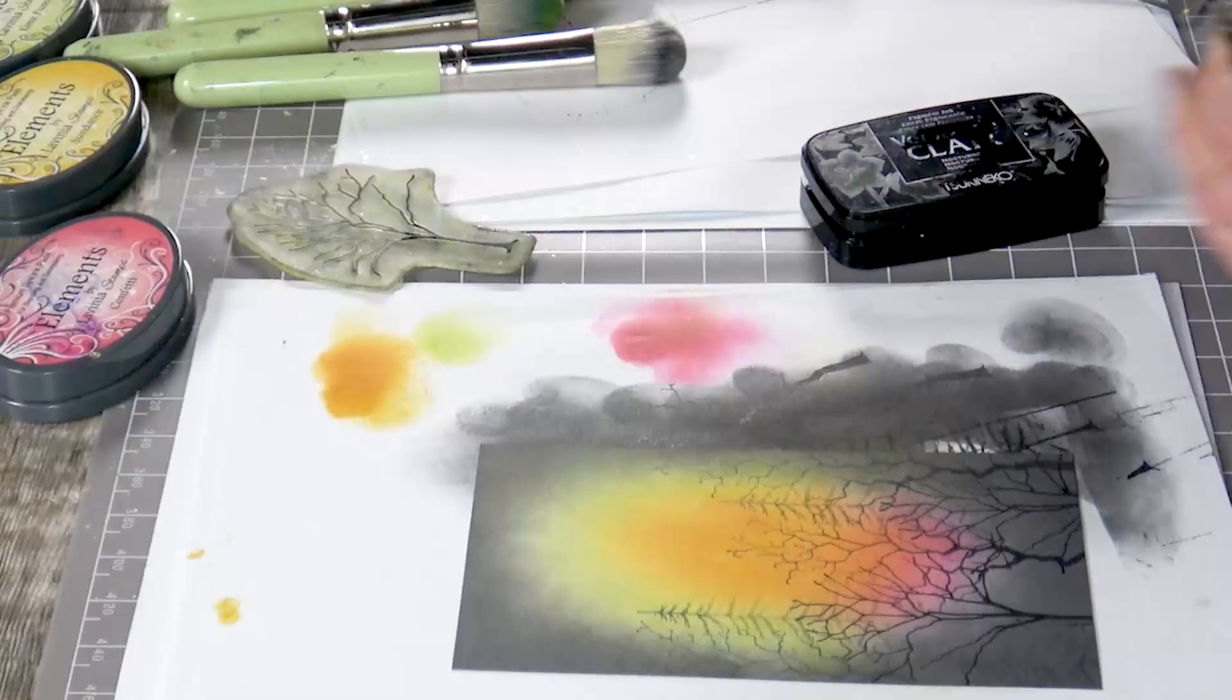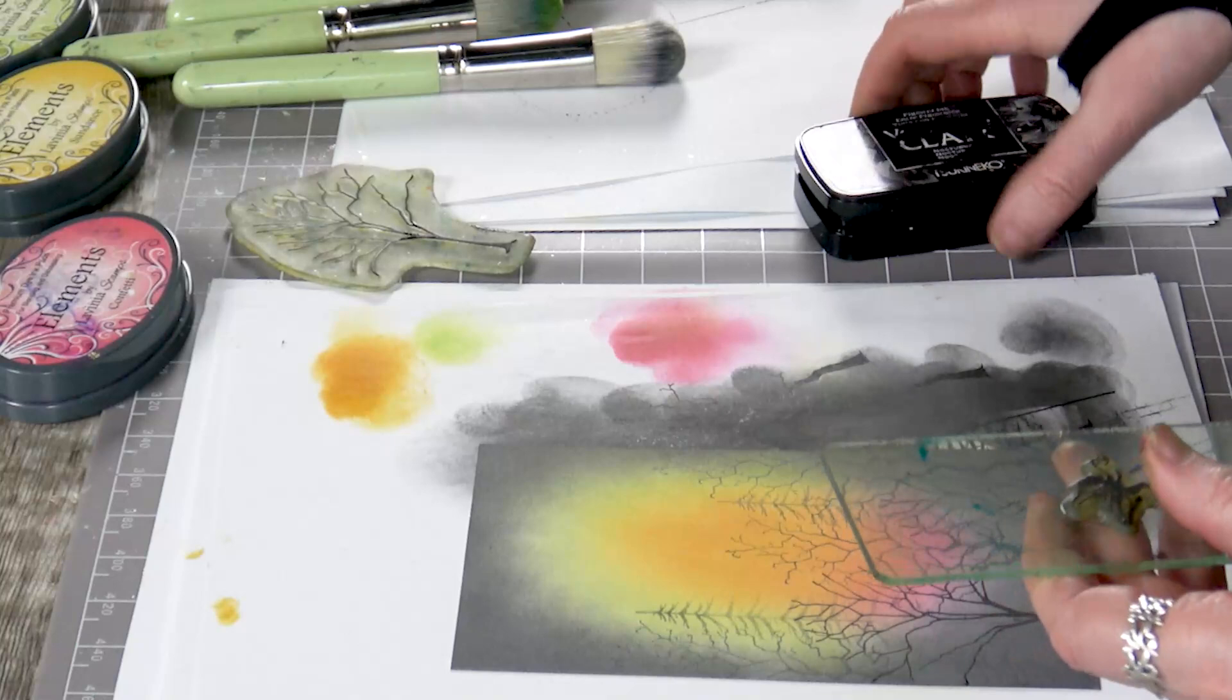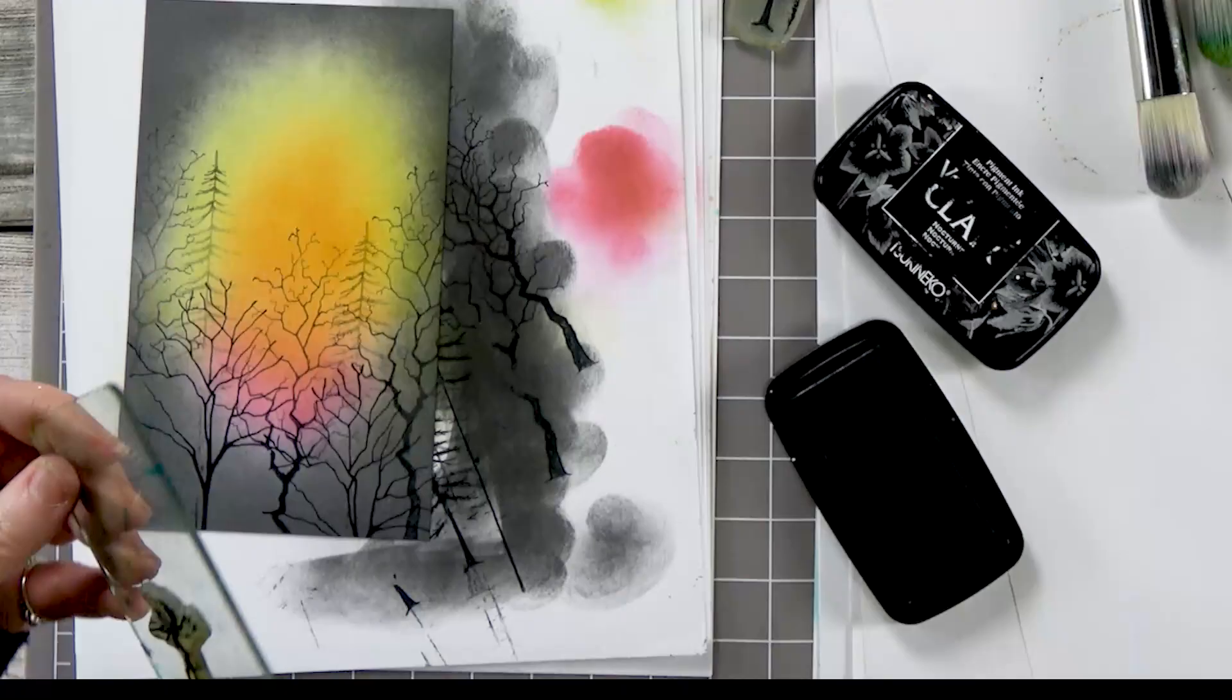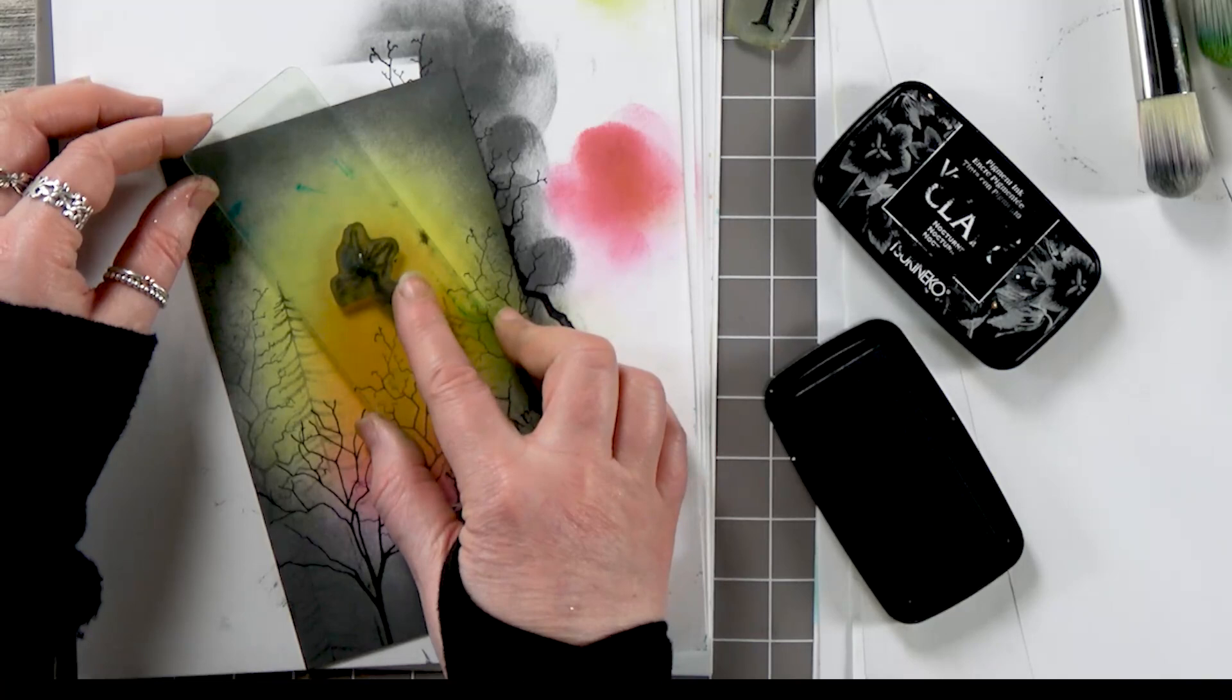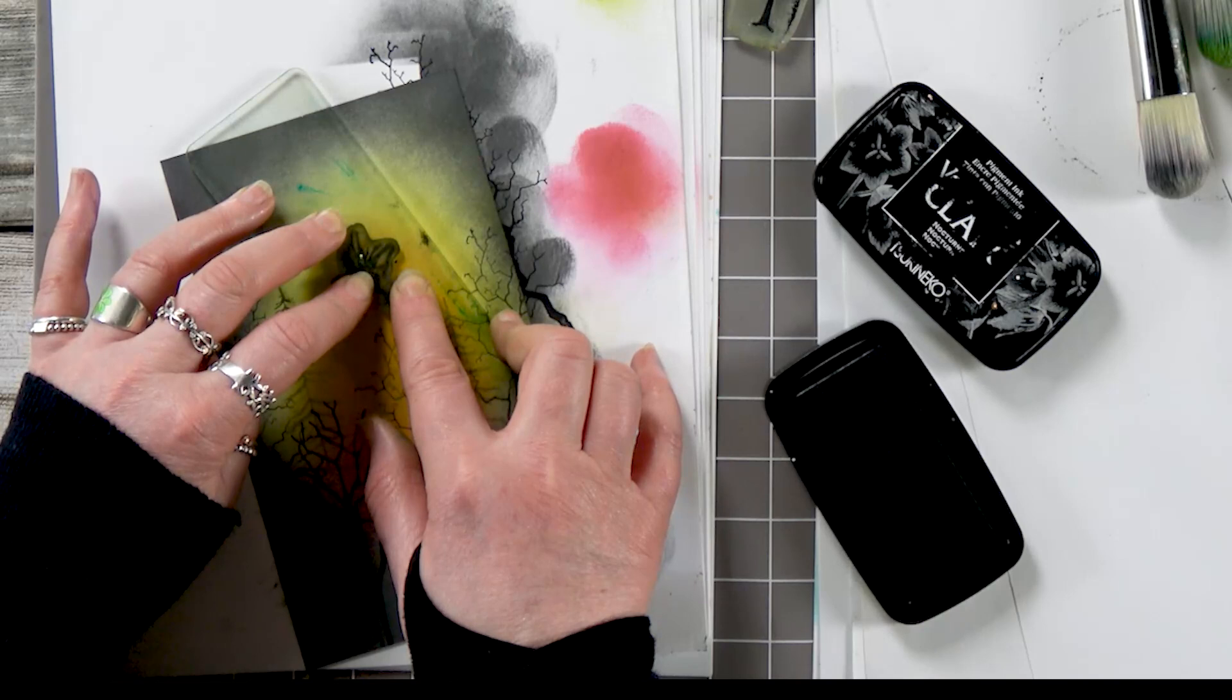And then lastly we're going to pop our lovely fairy flying just above, so we're going to ink up in the Nocturne, remembering it's a very small stamp, so we need to just make sure that we've got no ink on the edges and then I'm going to pop her up there, flying over the top.